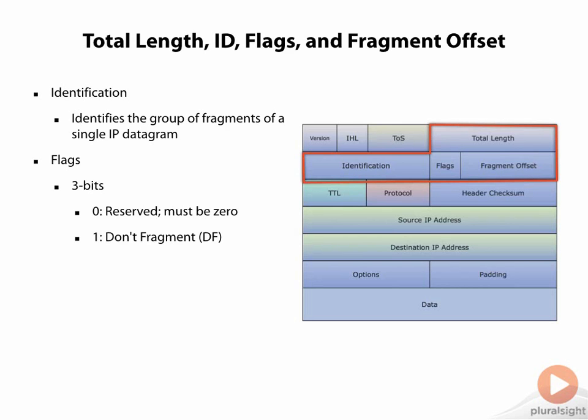Bit 2 is the More Fragments bit. That indicates there are more fragments if it's enabled. If it's turned off, that says this is the end of the fragmented stream of this packet.